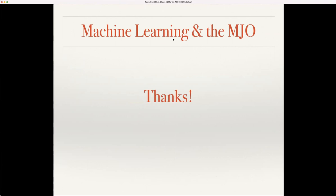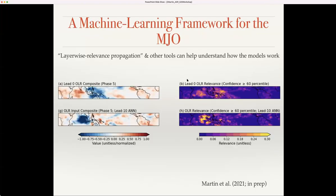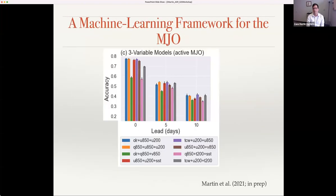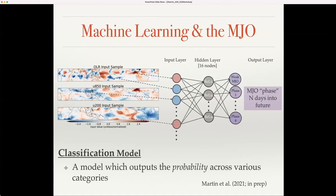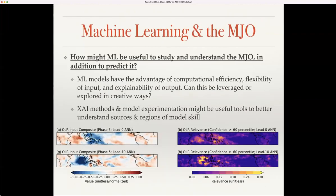Q: It's nice to see the QBO-MJO relationship captured in this machine learning model. It reminds me about your input domain — you use the whole domain, right? Have you considered only using the MJO active area, like the Indo-Pacific warm pool, because there might be a lot of noise from the Atlantic?